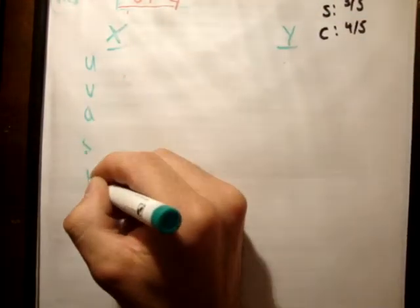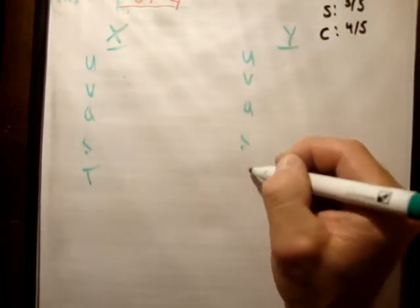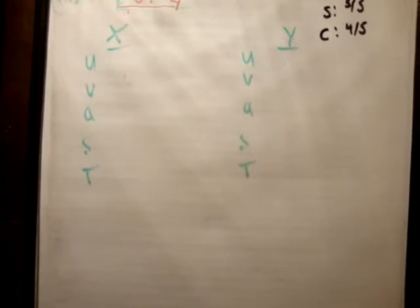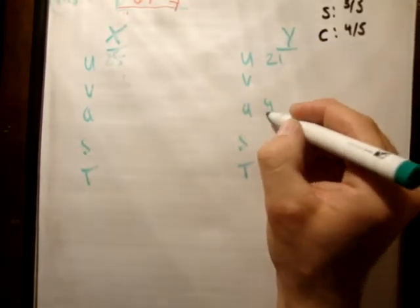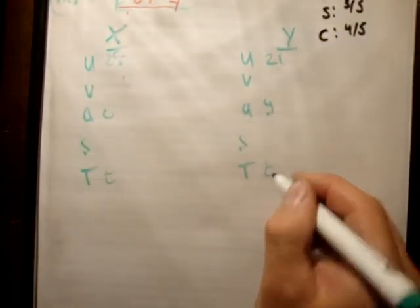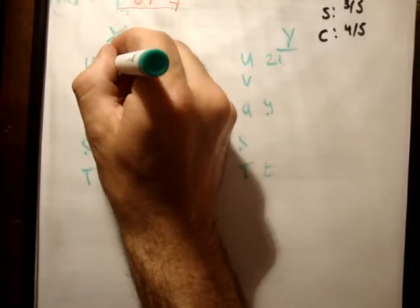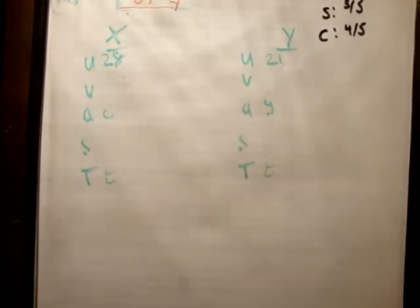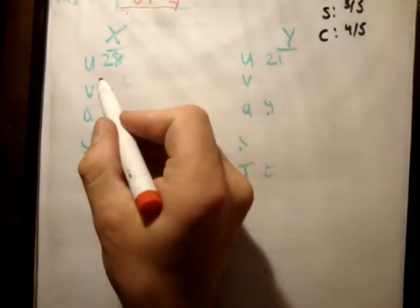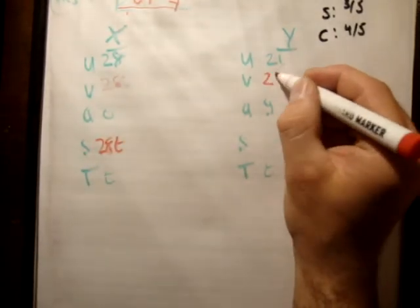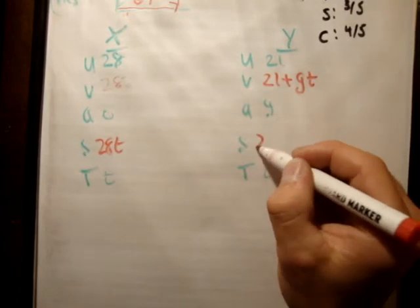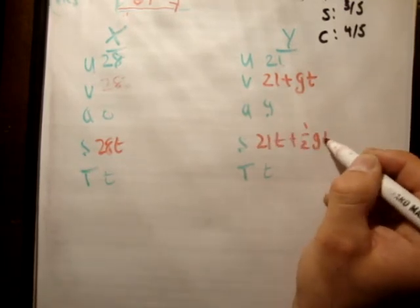So the initial velocity we found was 28 and 21. This is g, this is 0, this is t. So let's fit in the information that we know. This is 28 because v is equal to u plus at, and this is 28 times t. This is 21 plus gt and this one here is 21t plus a half gt squared.